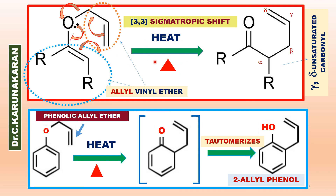On heating, allyl vinyl ether undergoes a 3,3-sigmatropic shift to give a gamma-delta unsaturated carbonyl compound. With respect to this functional group, this is alpha, then beta, gamma, delta — so it is a gamma-delta unsaturated carbonyl compound.